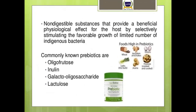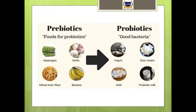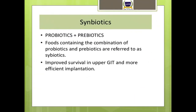Prebiotics are compounds in food that induce the growth or activity of beneficial microorganisms such as bacteria, fungus, or yeast. Examples include wheat, onions, and potatoes. In the gastrointestinal tract, prebiotics can alter the composition of biota present in the gut. Synbiotics are a combination of both prebiotics and probiotics — containing good microorganisms as well as compounds that help in their growth and activity. Examples include bifidobacteria and fructooligosaccharides.